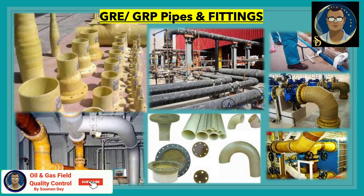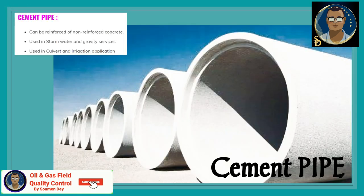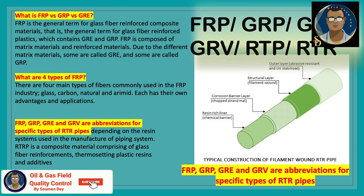RTR and RTP are also a big subject and the main focus of upcoming videos, so they will be discussed separately. The final category is cement pipes, which can be reinforced or non-reinforced. Reinforced concrete pipes have an iron mesh or iron rebar structure inside. Non-reinforced pipes are purely cast concrete. These are used in stormwater and gravity services, culvert, and irrigation applications.